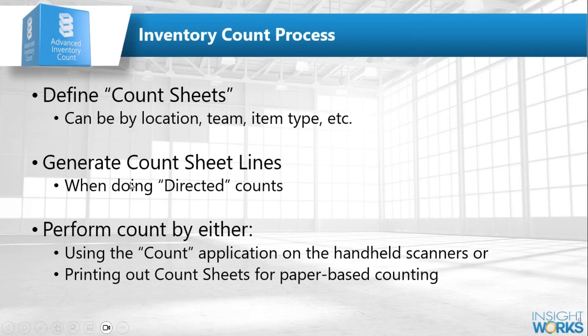Optionally, you'll generate your count sheets — similar to what Business Central calls 'Calculate Inventory.' That goes out and based on your criteria adds items to those count sheets, letting you print paper copies or load up the list on the scanners. If you want the system to tell you what might be out there to look for, you do directed counts and generate those count sheet lines. Otherwise, leave sheets blank and go scan everything you find.